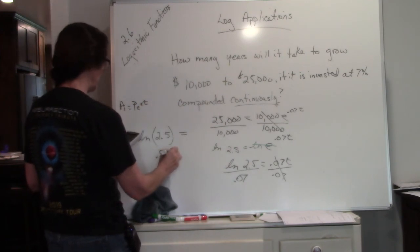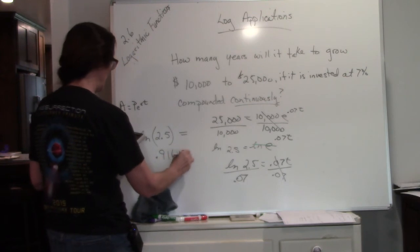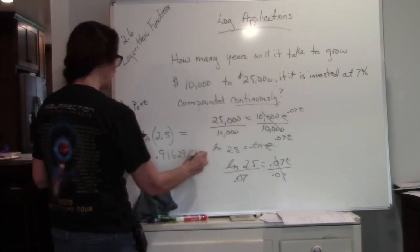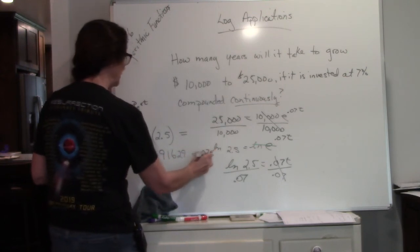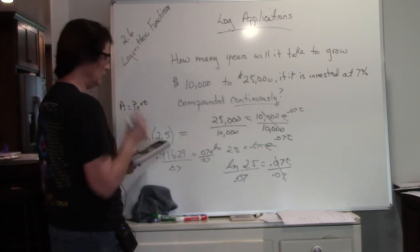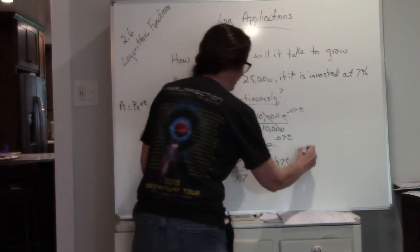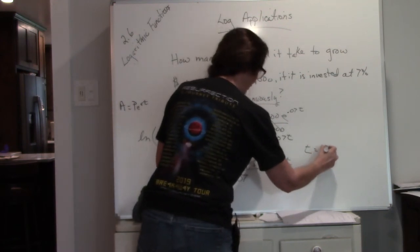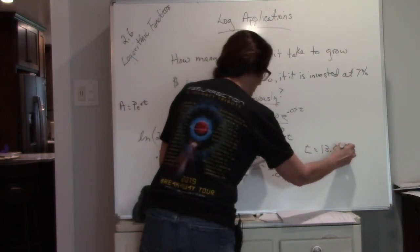So that answer is 0.91629. And then you're going to divide both sides by 0.07. When you divide by 0.07, you get 13.089.